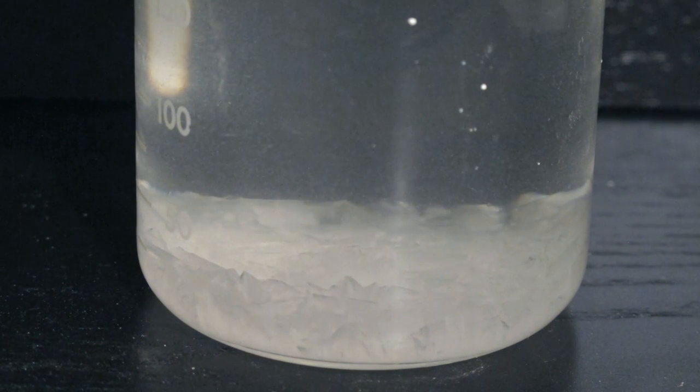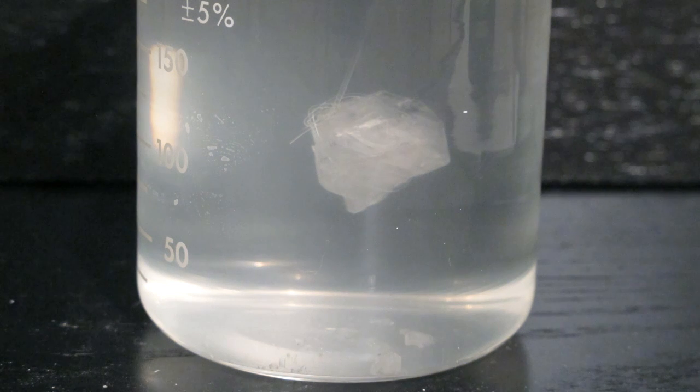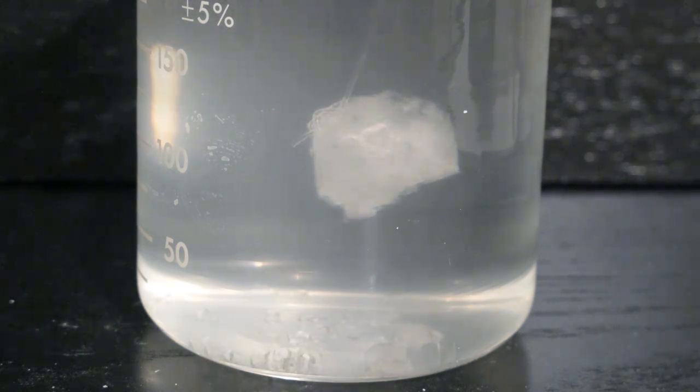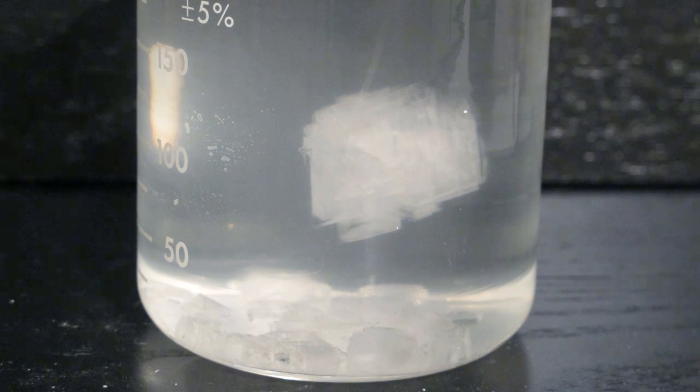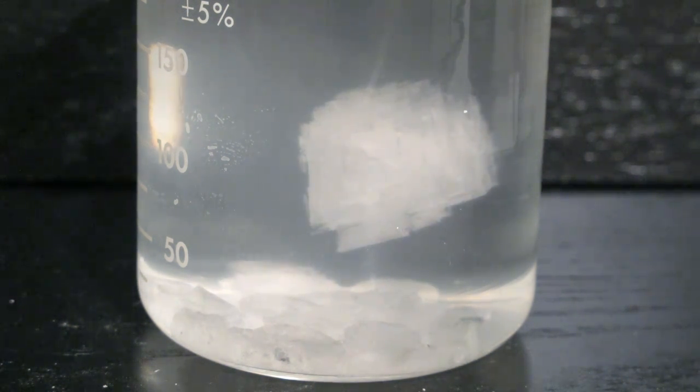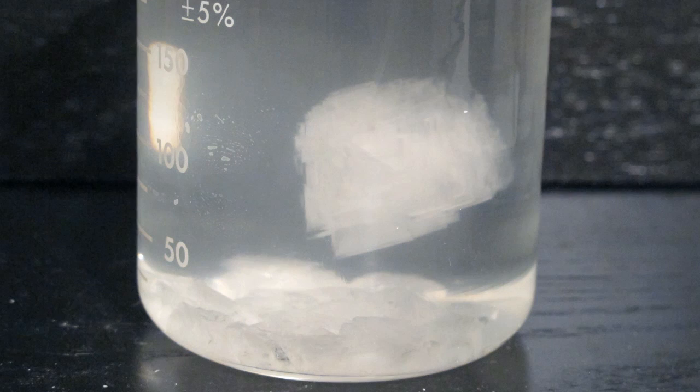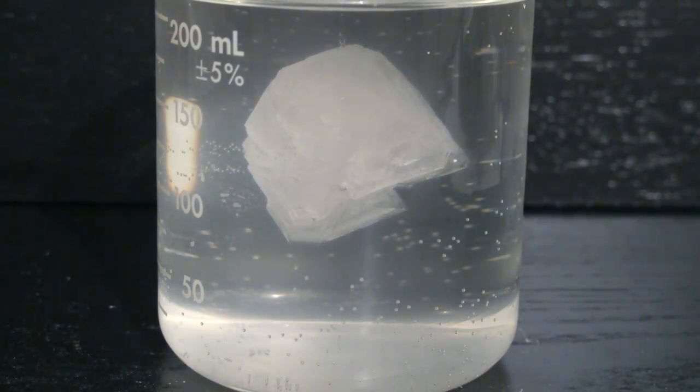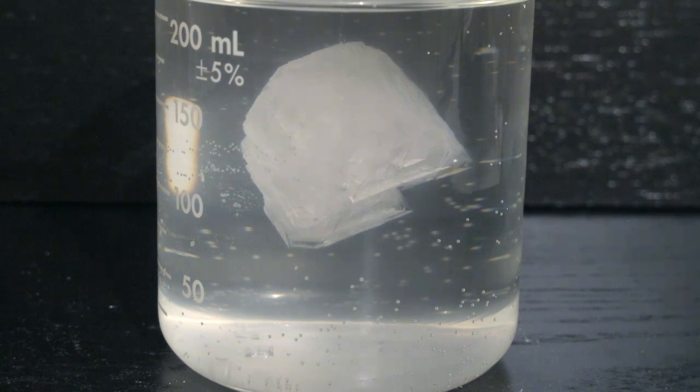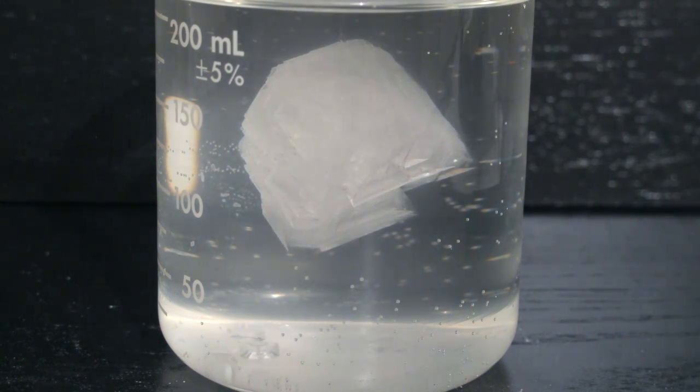The thing about alum molecules is that they would rather attach to an existing alum molecule or crystal formation rather than starting a new one. This is proven when we add our seed crystal to our warm solution, and as the solution cools, the precipitated alum molecules attach to the seed crystal over and over again to create a large crystal formation. This process is called crystallization.